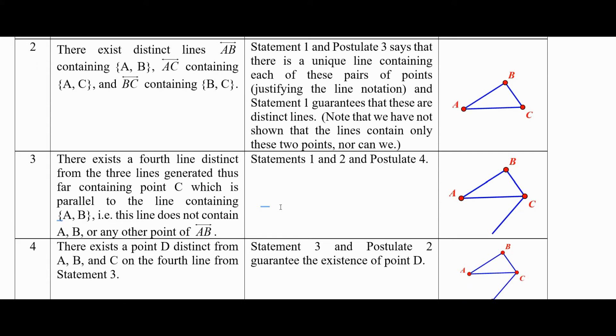There exists a fourth line distinct from the three lines generated thus far containing point C, which is parallel to the line containing A and B. The parallel postulate, postulate four, says if we have a line containing A and B, here's a point C not on it, there has to be a unique parallel, one and only parallel to that.